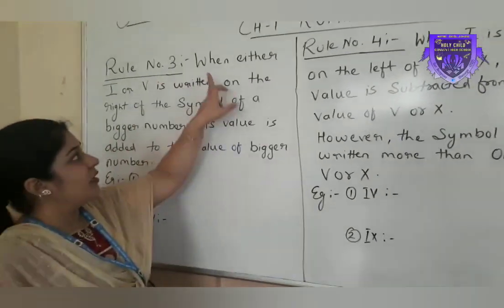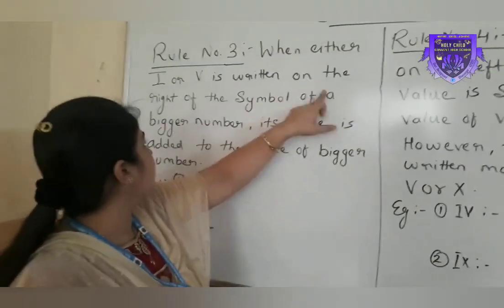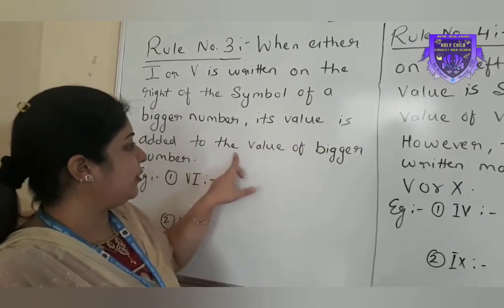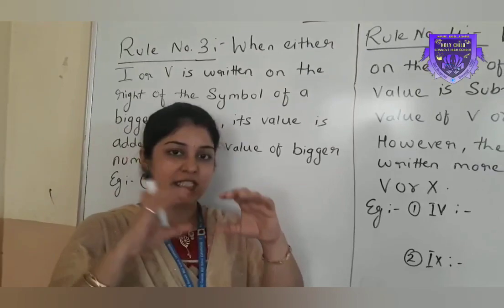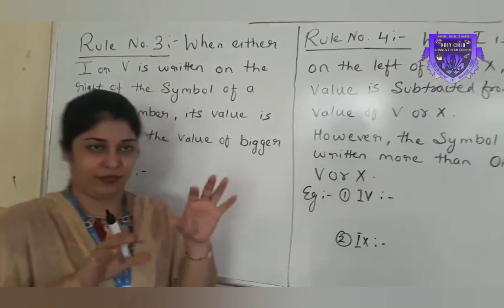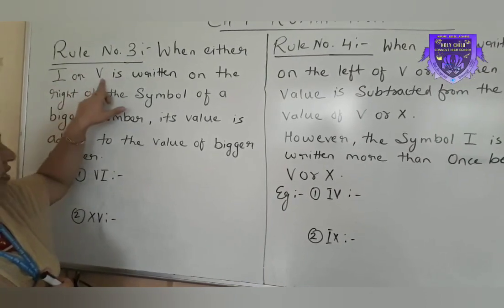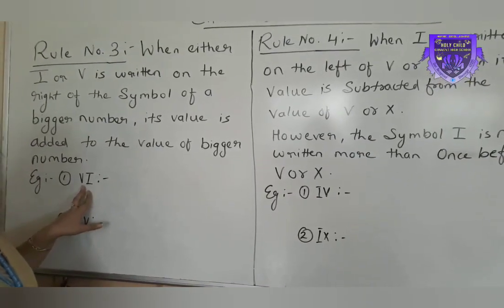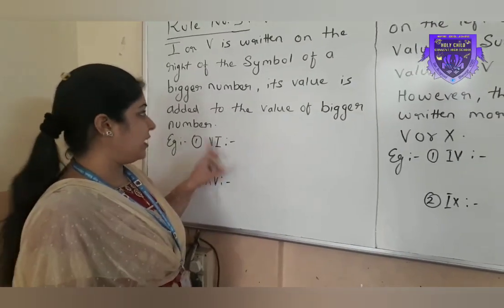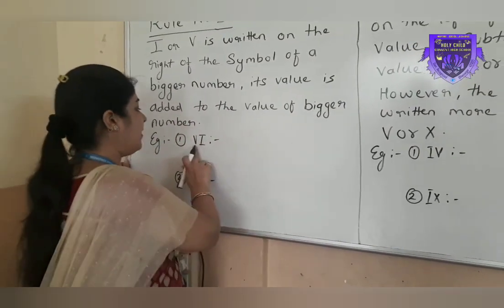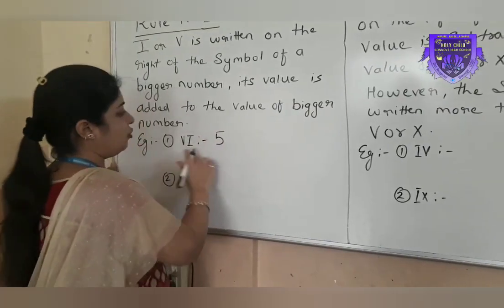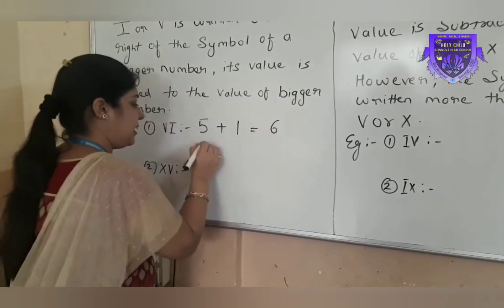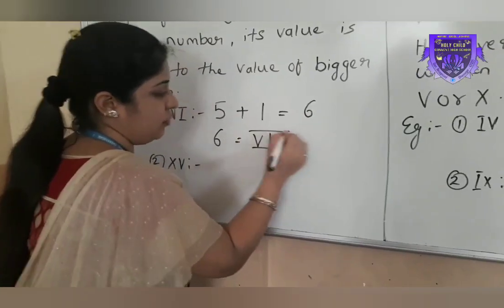Rule number 3: when either I or V is written on the right side of the symbol of a bigger number, its value is added to the value of the bigger number. From these three symbols I, V and X — if symbol I or V is written on the right side of the bigger number — for example, V is bigger than I, so if I is written on the right side of V, its value is to be added. Value of V is 5, value of I is 1. We add up the value. Total gives us 6. Means 6 is written like this in Roman numerals.